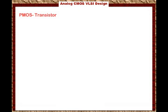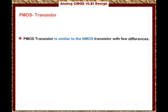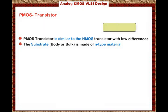We are ready now to discuss the structure of the PMOS transistor. The PMOS transistor is similar to the NMOS transistor with few differences. The substrate, which is the body or the bulk, is made of N-type material. Remember that in the NMOS it is made of P-type material, and the PMOS is made of N-type material.